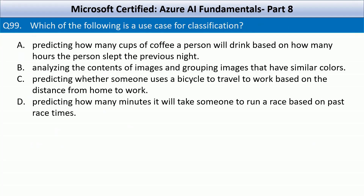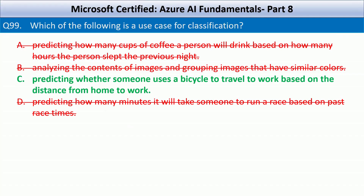Which of the following is a use case for classification? Options are: predicting how many cups of coffee a person will drink based on hours slept — this is a regression task as we are predicting a numerical value; analyzing contents of images and grouping images that have similar colors — this is an example of clustering; predicting whether someone uses a bicycle to travel to work based on distance from home — this is binary classification and the correct choice, as whenever the output is discrete like yes or no, spam or not spam, or dog or cat, you should think about classification; predicting how many minutes it will take someone to run a race based on past race times — again a regression task.